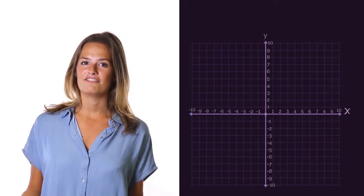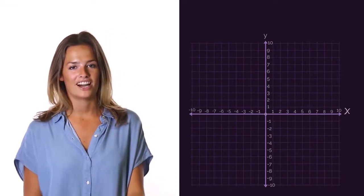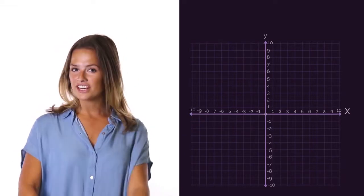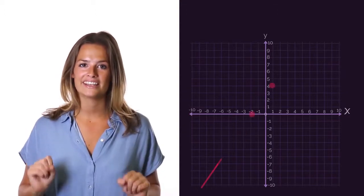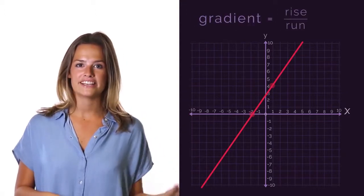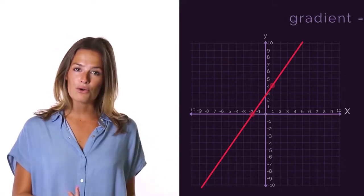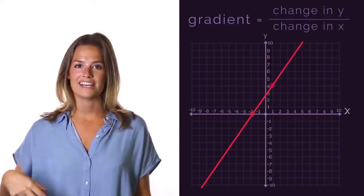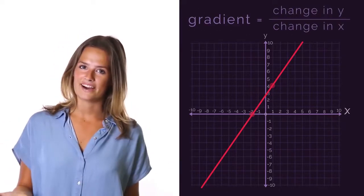So, there you have finding the gradient of a straight line from the graph. You just need to remember to take two points on the line, and then using gradient as the rise over the run, or the change in y over the change in x, you can easily find the gradient.